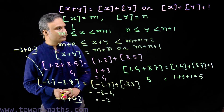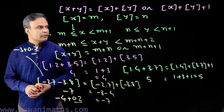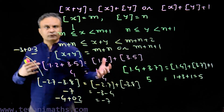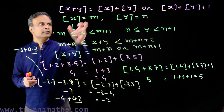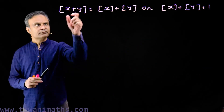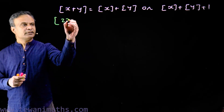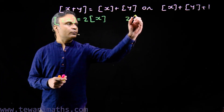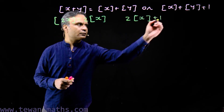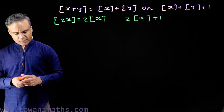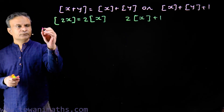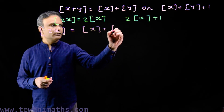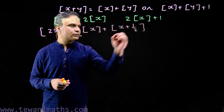We have to remember that fractional parts always have to be kept non-negative. When the sum of fractional parts is greater than or equal to 1, use this comparison. When the sum of fractional parts is less than 1, use this comparison. Now, in this property, if we replace y by x, we get greatest integer of 2x is equal to 2 times the greatest integer of x, or 2 times the greatest integer of x plus 1.